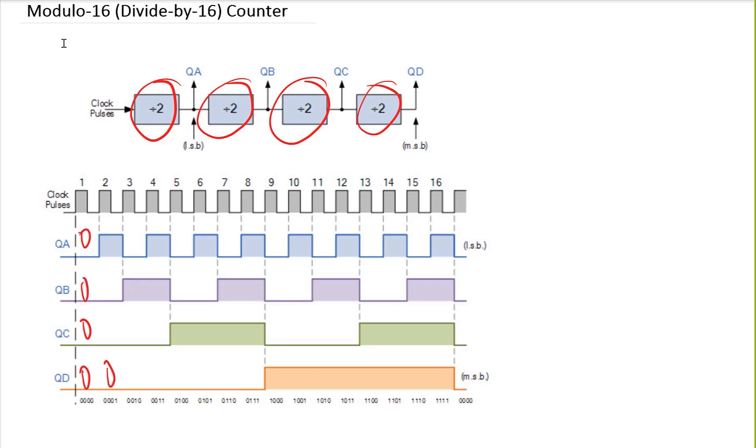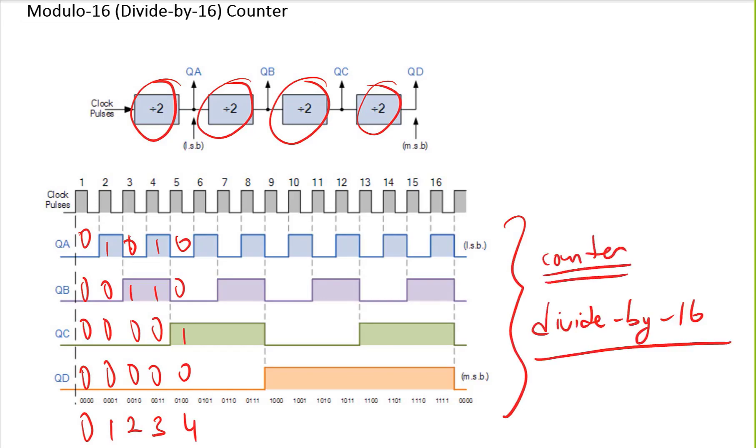In the next cycle I have 0, 0, 0, 1. In the next cycle I have 0, 0, 1, 0. And then I have 0, 0, 1, 1. This is counting. So we have 0 here, 1 here, 2 here, 3 here, and 4 here. You can use this as a counter or you can use it as a divide-by-N circuit. And then you will go up to 15. After 15, then you will go back to 0 and count again.